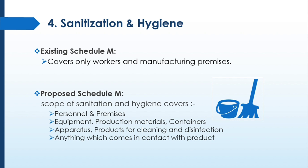The next topic is Sanitization and Hygiene. In the existing Schedule M, sanitization and hygiene mainly covers workers and manufacturing premises. But in Proposed Schedule M, the scope expands to cover personnel, premises, equipment, production materials, and materials or products used for cleaning — meaning cleaning agents also come within the scope of GMP. Cleaning aids like PPE or brooms, apparatus, disinfectants — anything which comes into contact with the product — are now considered under Schedule M requirements for Sanitization and Hygiene.